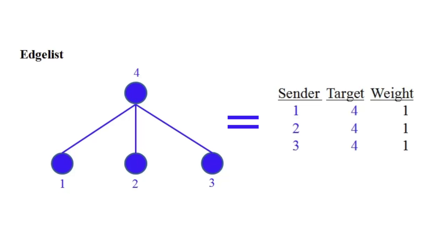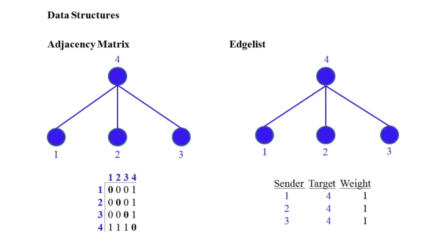There's a more efficient, human-friendly data representation where you enter data and the computer converts it to a matrix for calculations — that's called an edge list. An edge list has three major components: a sender who initiates a tie, a target who receives that tie, and a weight representing the strength of that tie. In the handout, I have a representation of the same network using both an adjacency matrix and an edge list to show how the two fit together.